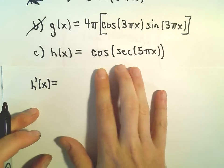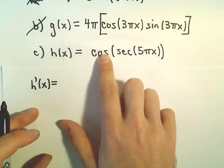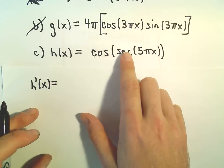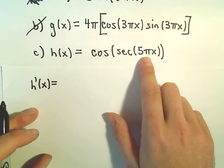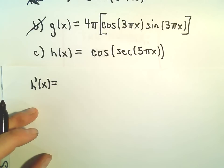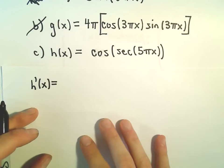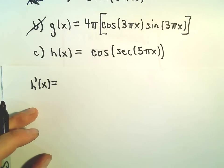There's no product rule in this because there's no cosine x times sine x. It's cosine of secant of 5 pi x. That's one thing to be aware of at the beginning. Think about that.